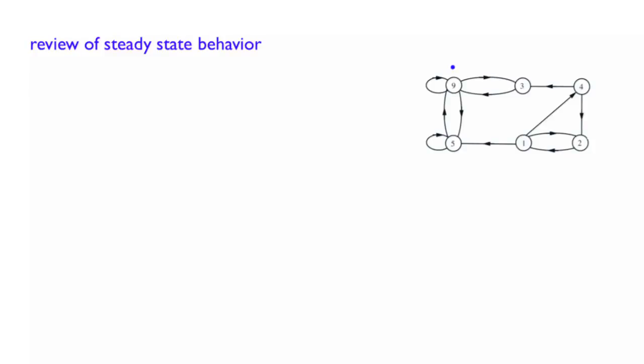So for example, state 9 is recurrent, state 3 is recurrent, state 5 is recurrent. And why are they recurrent? Because whenever you are in 9, no matter where you go, there is always a way to come back. You can go to 3, come back, or 5, and come back. And actually, this is a recurrent class because all these recurrent states communicate between each other.